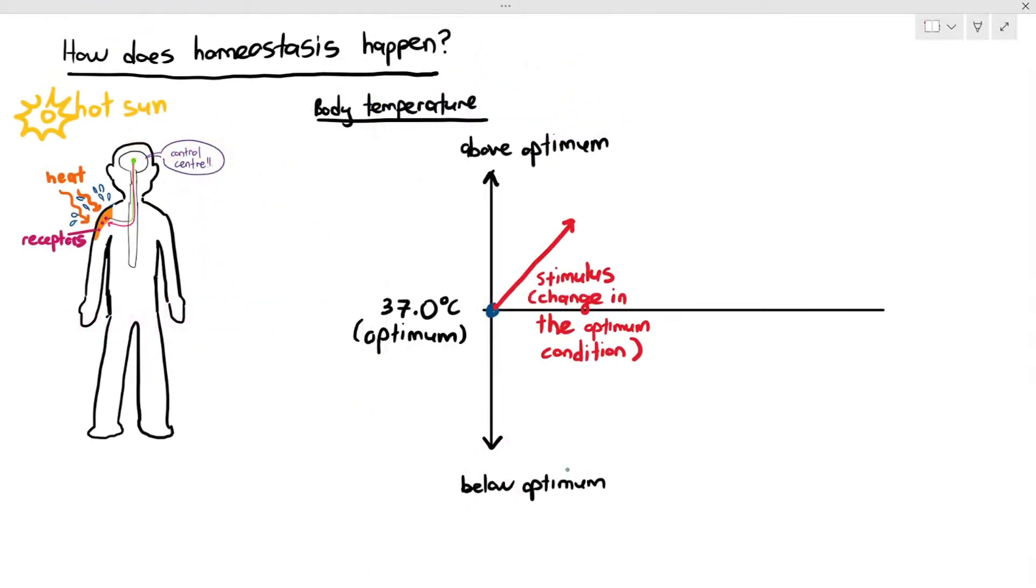So homeostasis involves a stimulus which will be detected by receptors. Receptors are just structures in our body that detect the stimulus. There can be many different types of receptors, which we will see later. And the receptors will send a signal to the control center. Now, some students will ask the question, what exactly are these signals? The signals can be things like chemical signals, which we will see in later parts of the chapter, or it can also be nerve impulses or electrical impulses, which we will look at in chapter 15. So right now, you just have to say that the receptors send a signal to a part of the body called the control center.